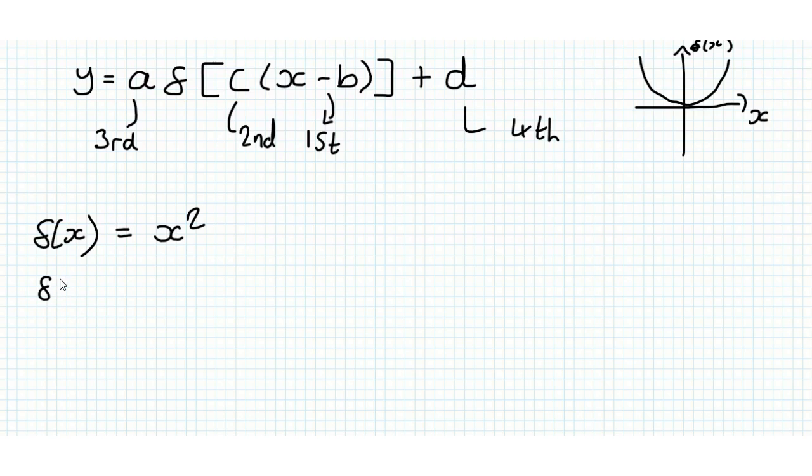Now we want to look at the graph of, well let's use g of x, g of x is equal to 3 times x minus 1 squared plus 4. First thing we are going to do to draw this graph is we are going to write it in terms of f of x. So first of all, what are we doing in our function?